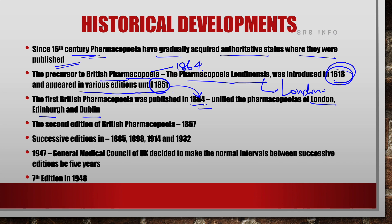The first British Pharmacopoeia was published in 1864, and the second edition was published in 1867. It continued with successive editions in 1885, 1898, 1914 and 1932.